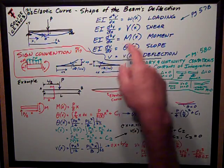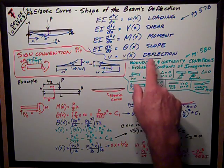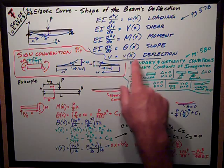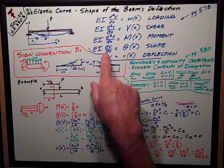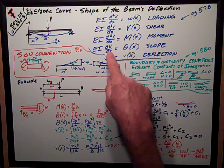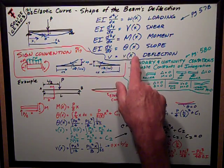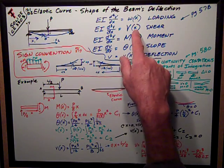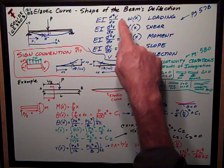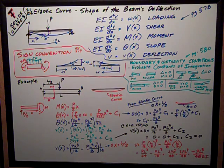Or the other way of putting it is that the first derivative of the deflection function vx is the slope function. The second derivative of vx is the moment function. The third derivative is the shear function. And the fourth derivative is the loading function.